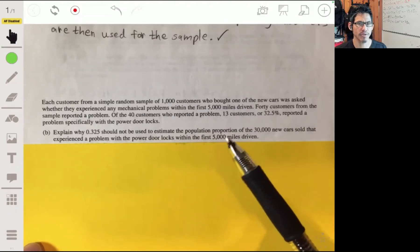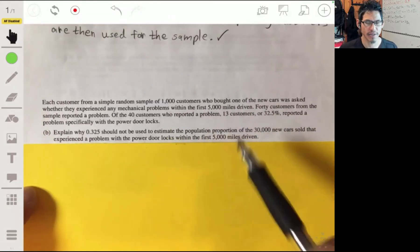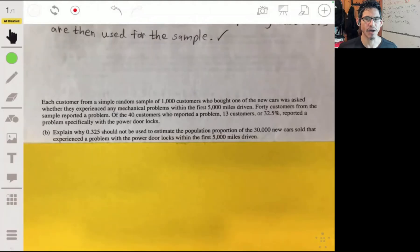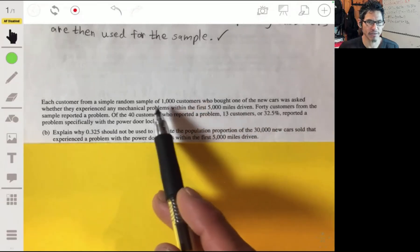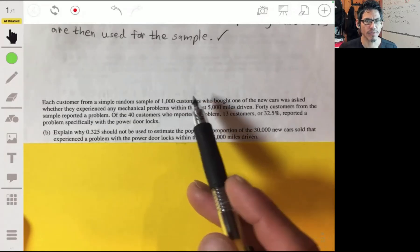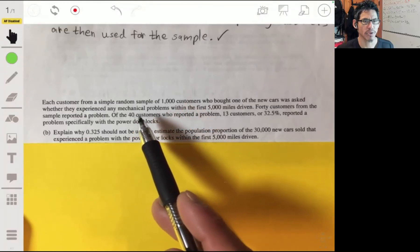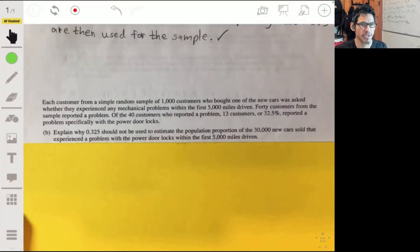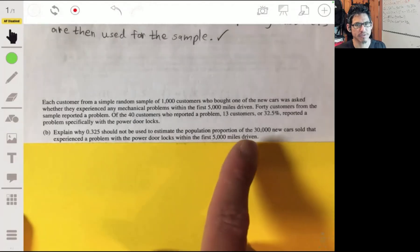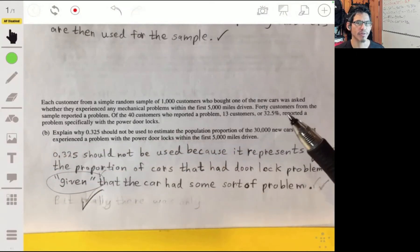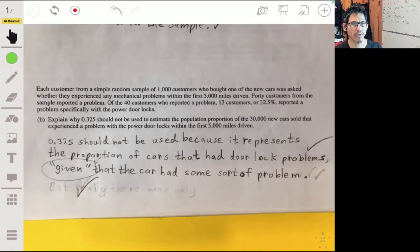He wants to make sure that you understand that that 13 out of 40, or 32.5%, is not the right estimate for what percent of all the cars or all the customers are going to have problems with their door locks. Because you first have a sample of a thousand out of the 30,000, and then from those thousand you have 40. So only 40 out of a thousand had any problem. You have a condition that they already had a problem. So given that they had a problem, they had a 32.5% chance of having a problem with the door locks. So this is basically conditional probability.